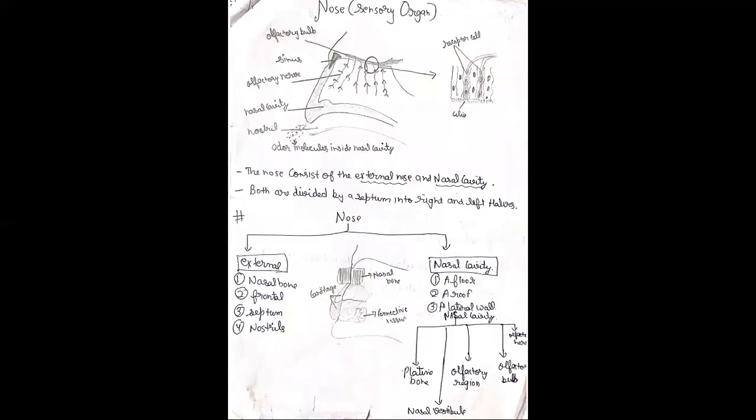Next is how to sense smell — the physiology of how the nose works. Step by step: first, olfactory molecules from the air enter the nose through the nasal cavity. Next, they reach the olfactory bulb. The molecules stimulate the olfactory neurons at the olfactory bulb, and the receptors are activated.